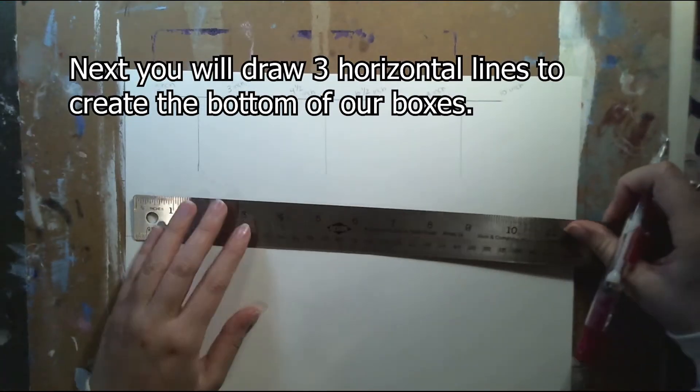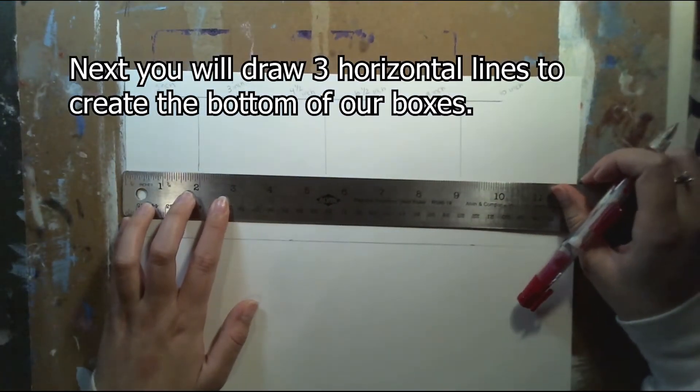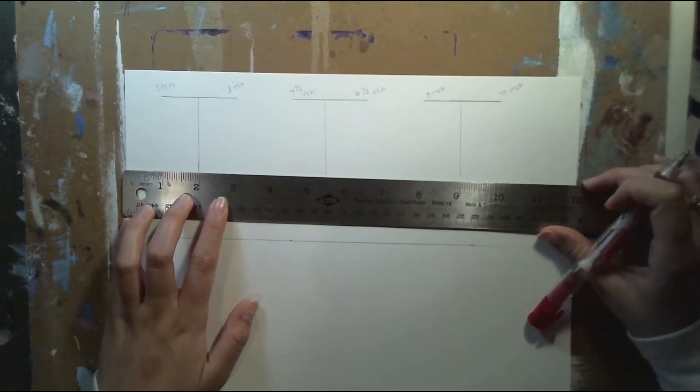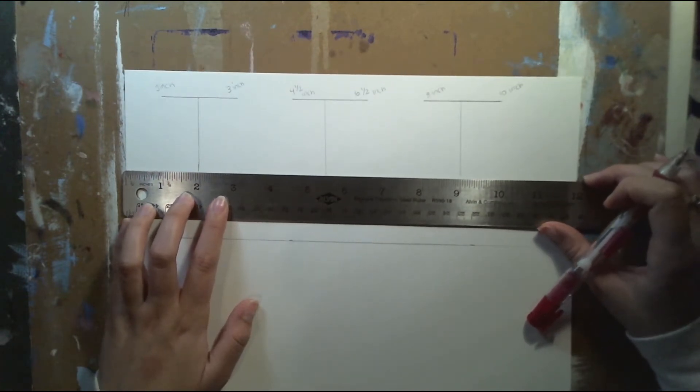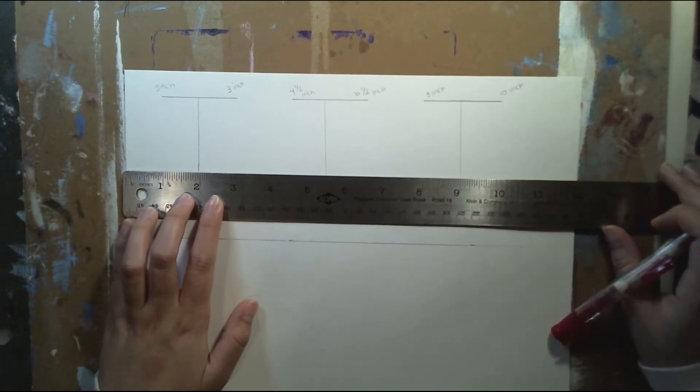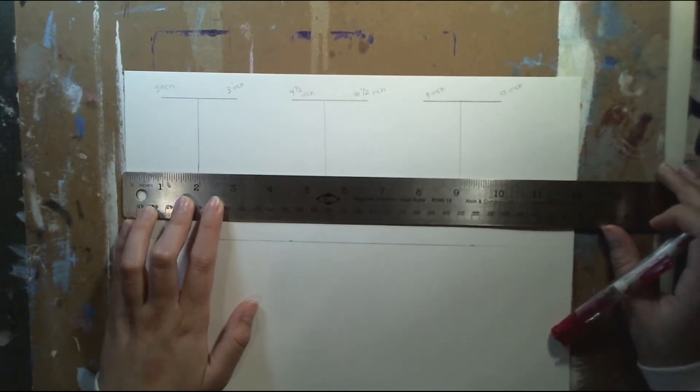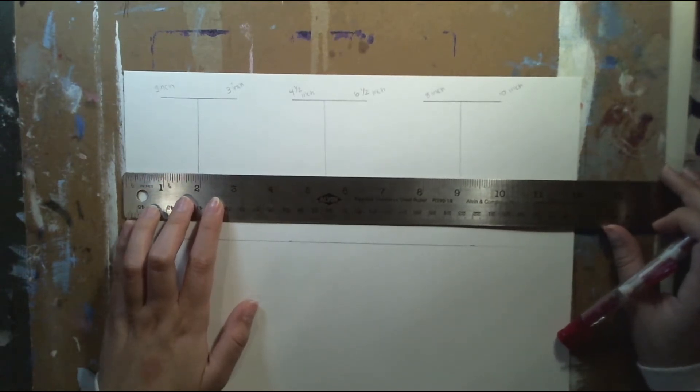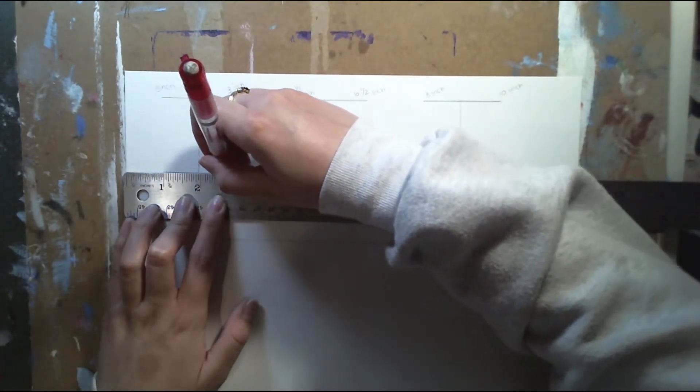Next now you're gonna draw your three horizontal lines to create the bottom of your boxes. Then you're gonna draw three horizontal lines again from the one inch to three inch, four and a half to six and a half and then eight to ten inch.